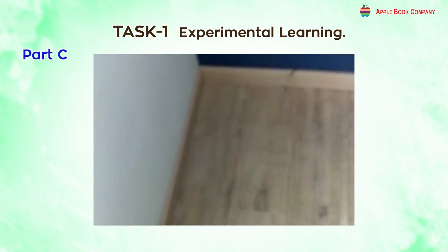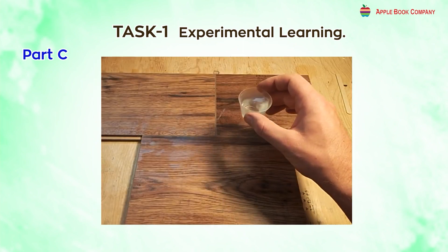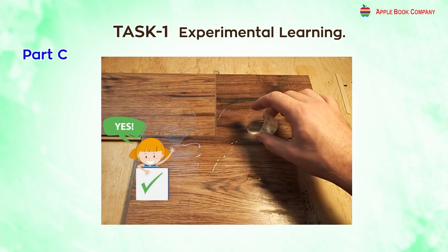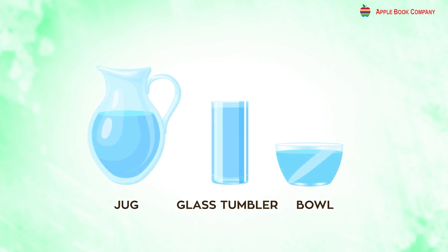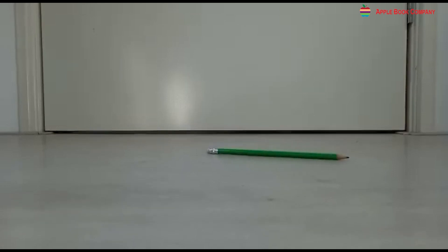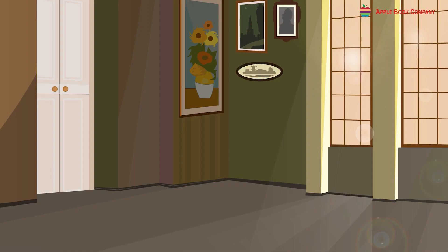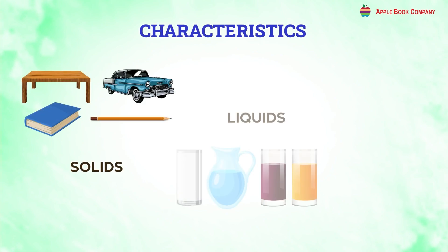Part C: Drop the pencil on the floor. Does it flow all over the place? No. After doing this activity, you must have noted that the pencil did not change its shape even when it was kept in different containers. On the other hand, the water took the shape of the container that it was in. The pencil, on being dropped, did not flow on the floor — it retained its shape and size. Water, on the other hand, spilled on the floor and did not retain any shape or size.